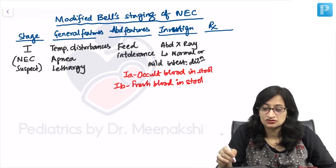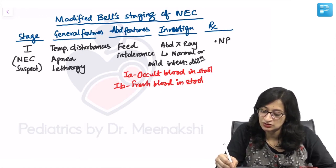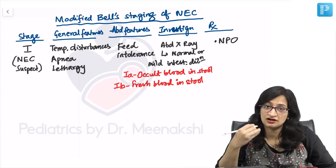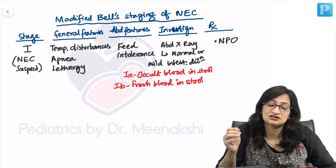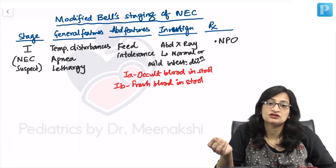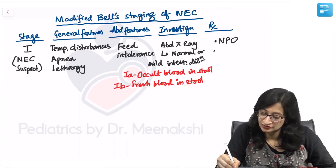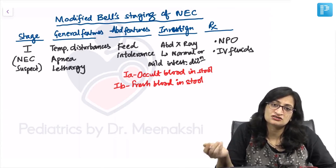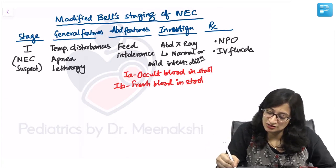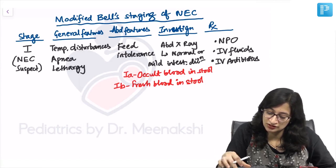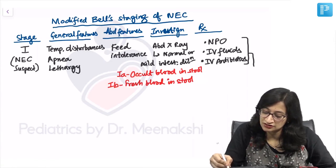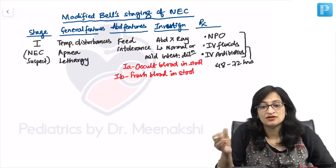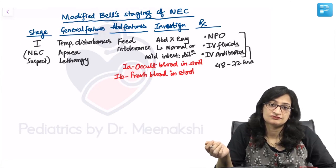The treatment for stage 1 NEC is to make the baby NPO — nil per oral — so the intestine gets some time to rest. You start IV fluids and IV antibiotics, because neonatal sepsis can also produce a NEC-like picture. You do this for 48 to 72 hours and then reassess. If the baby has improved, you allow feeds; if the condition has worsened, you treat according to the next stage.